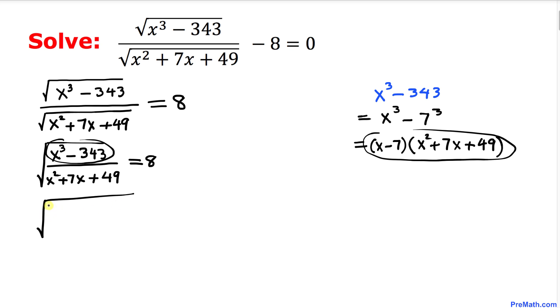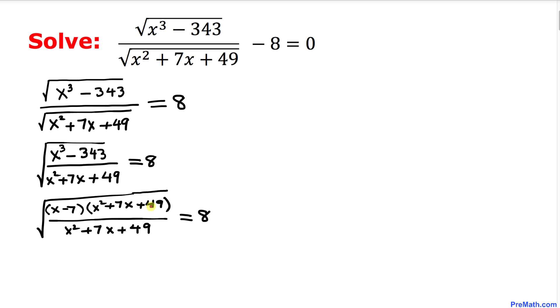I can write this one as (x - 7)(x² + 7x + 49) divided by x² + 7x + 49 equals 8. And now we can see this x² + 7x + 49 is gone with the top part.